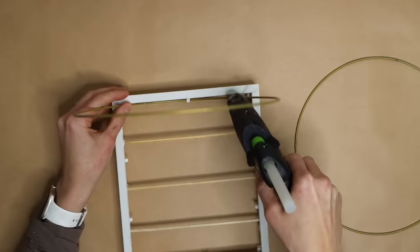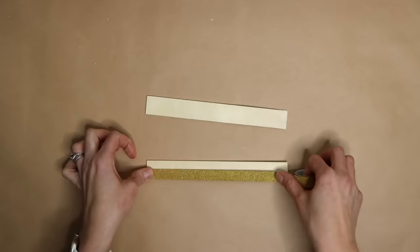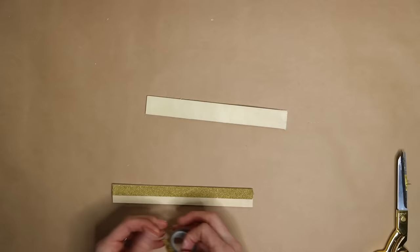Hot glue two large gold metal rings to the side of the frames on parallel sides. Glue the second frame to the top side of the rings. Cut down paint stir sticks to fit the interior part of the frame and cover them with gold washi tape.